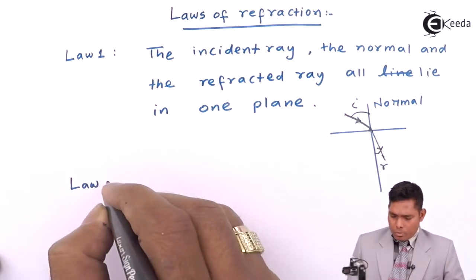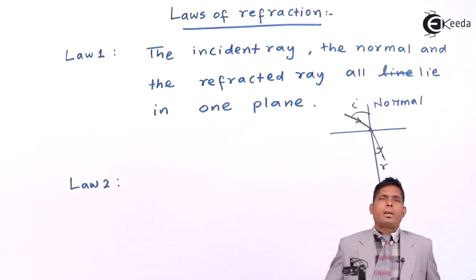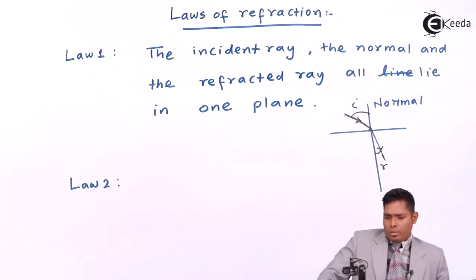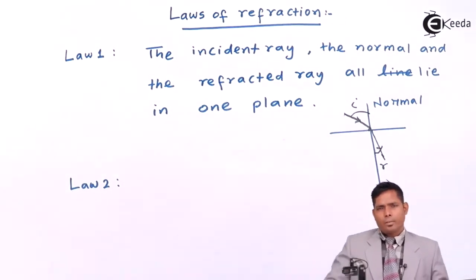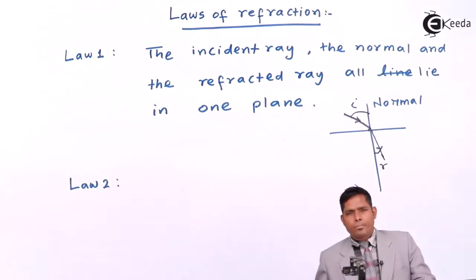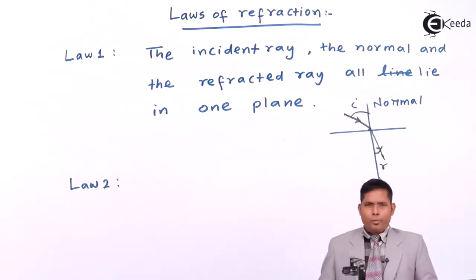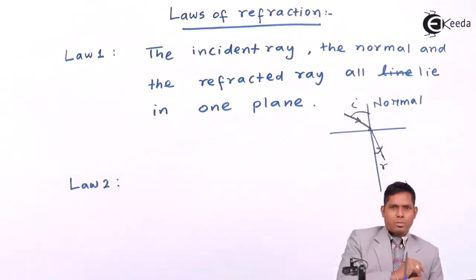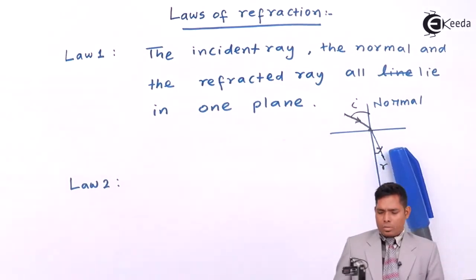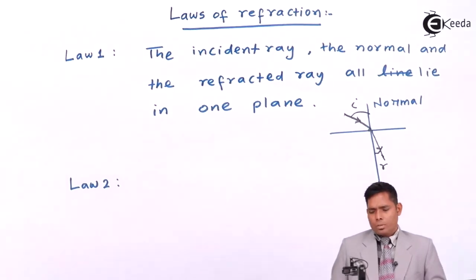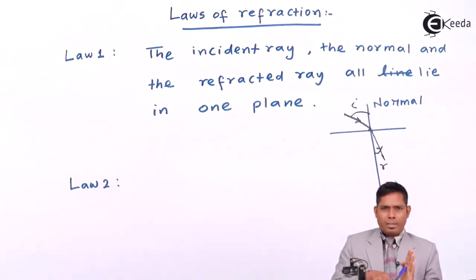Law number two. The first law talks about how the lines lie — in what plane they lie, on which side of the normal they lie. We are interested in the incident ray and the refracted ray. The incident ray is this one and the refracted ray is this one. After refraction, the ray is called the refracted ray; before refraction, it is called the incident ray. The incident ray is lying on the left side of the normal, and the refracted ray is on the right side.